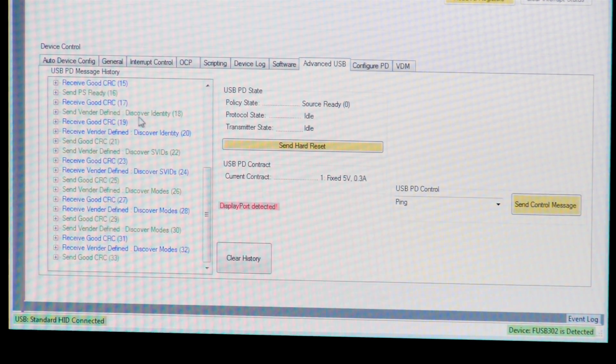The first command is Discover Identity, both a command and a response. This is the way a device like the FUSB302 can identify what was connected. Once it identifies what's connected, it then tries to determine which vendor made the device. This is done through the Discover SFIDs command and response.